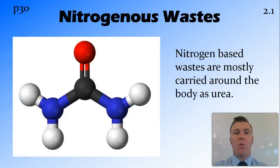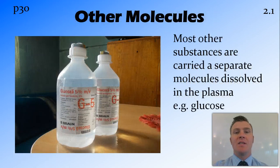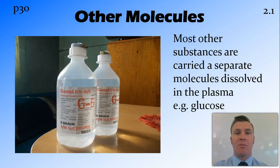Nitrogenous wastes are caused as a byproduct of metabolism, and they are mostly carried as urea that is dissolved in the plasma. There are a few other molecules that need to be transported around the body — for example, glucose — and these are found as separate molecules dissolved in the plasma. As mentioned, the plasma, being 90% water, is a great solvent for a lot of these molecules.